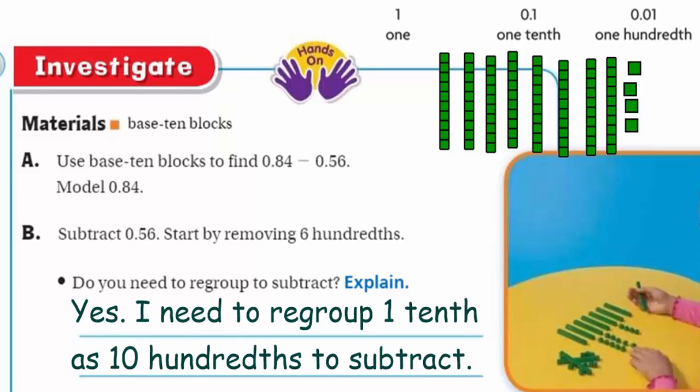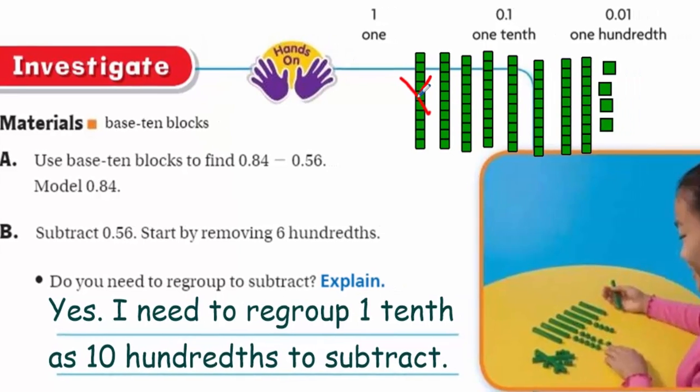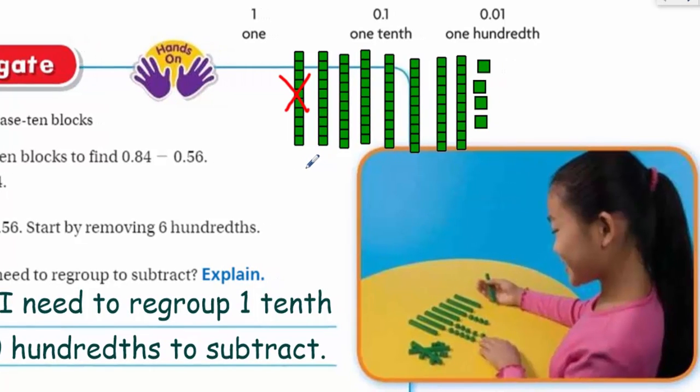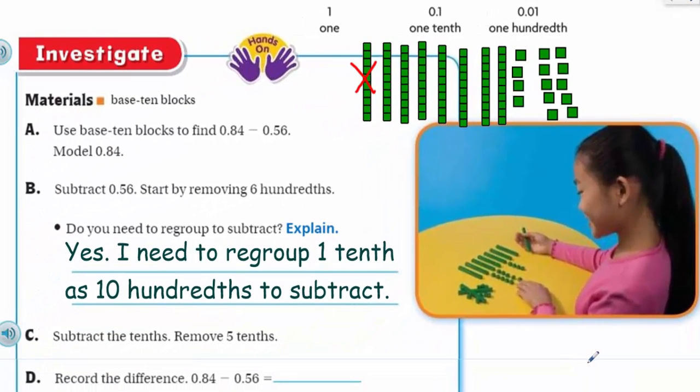So I'm going to go ahead and do that. Cross out this guy. This way I can add on 10 hundredths over here. I have 10 hundredths now for my 1 tenth. Now to subtract the tenths. Remove 5 tenths. I can do that. I have lots of tenths. So I'm going to remove 1, 2, 3, 4, 5.